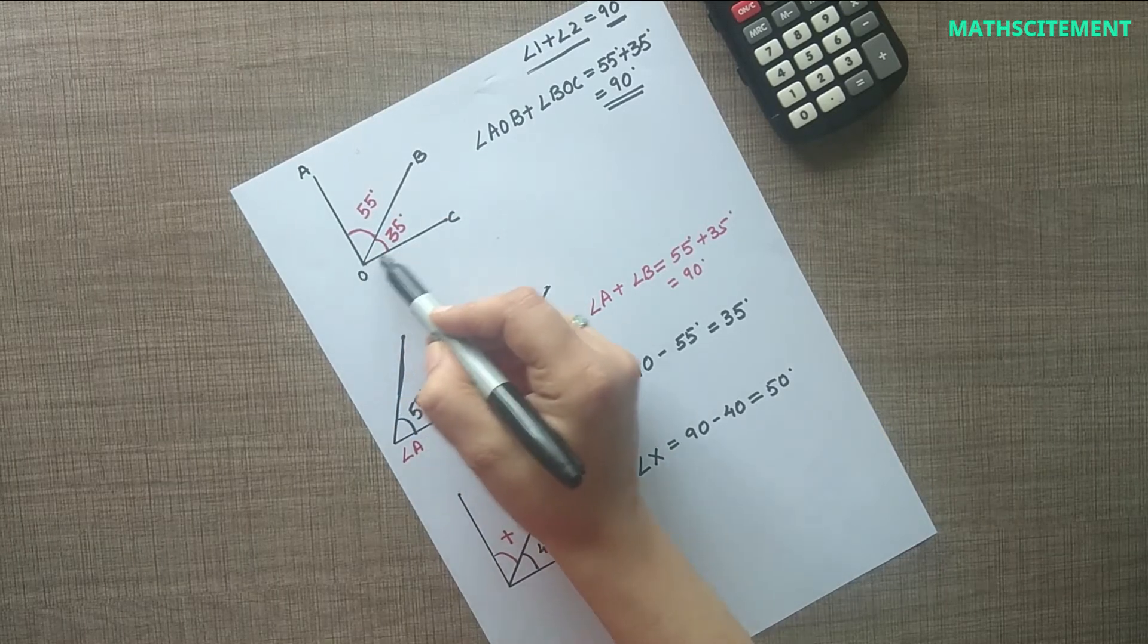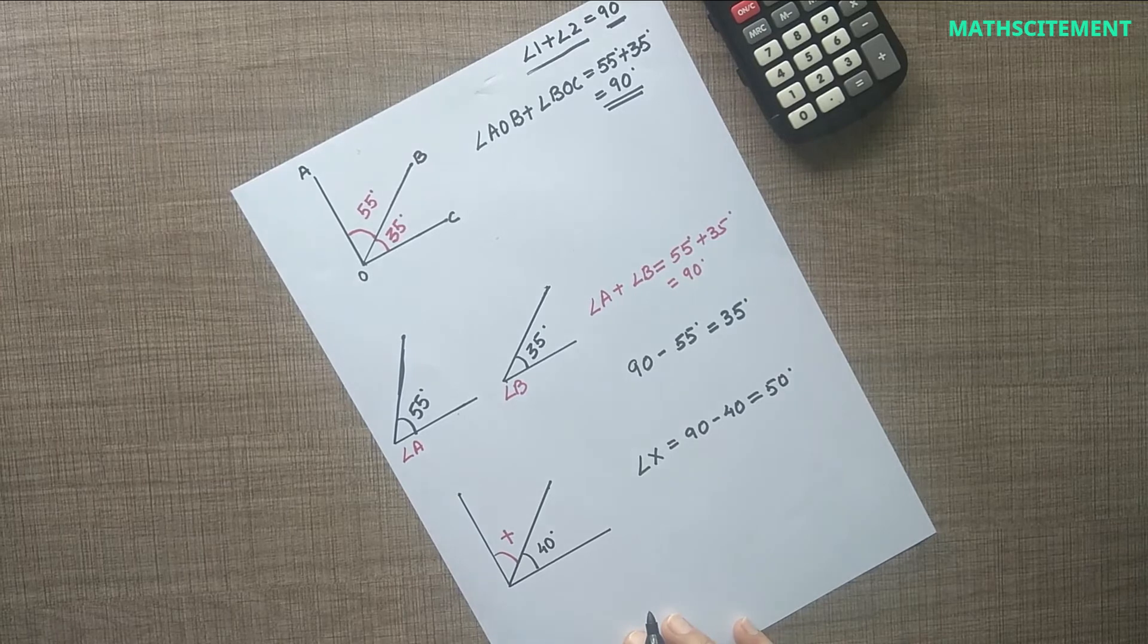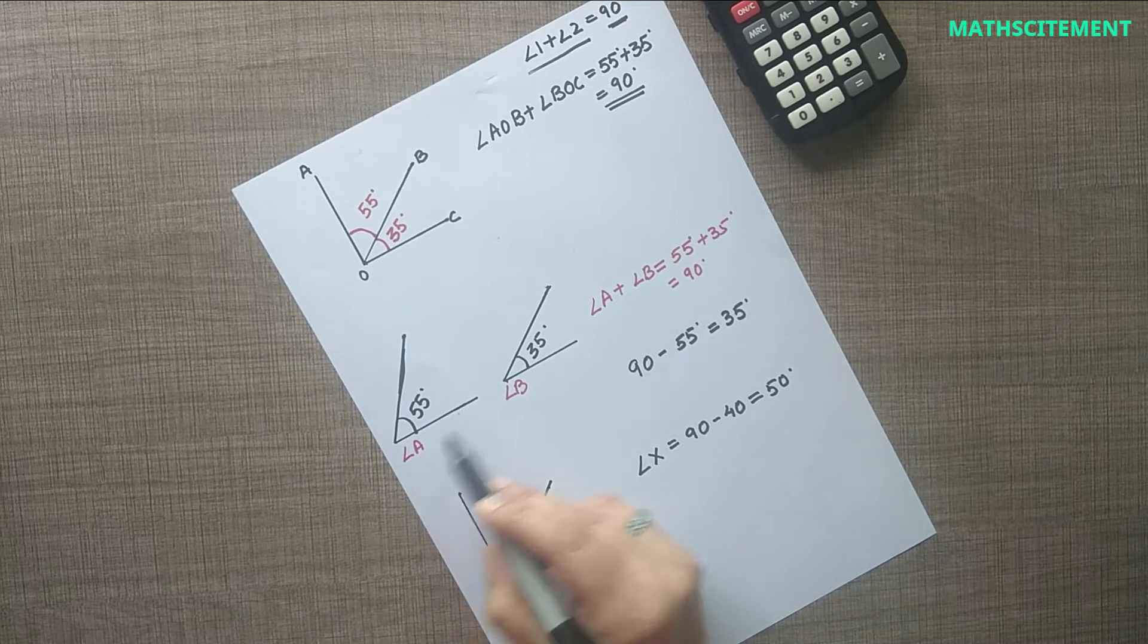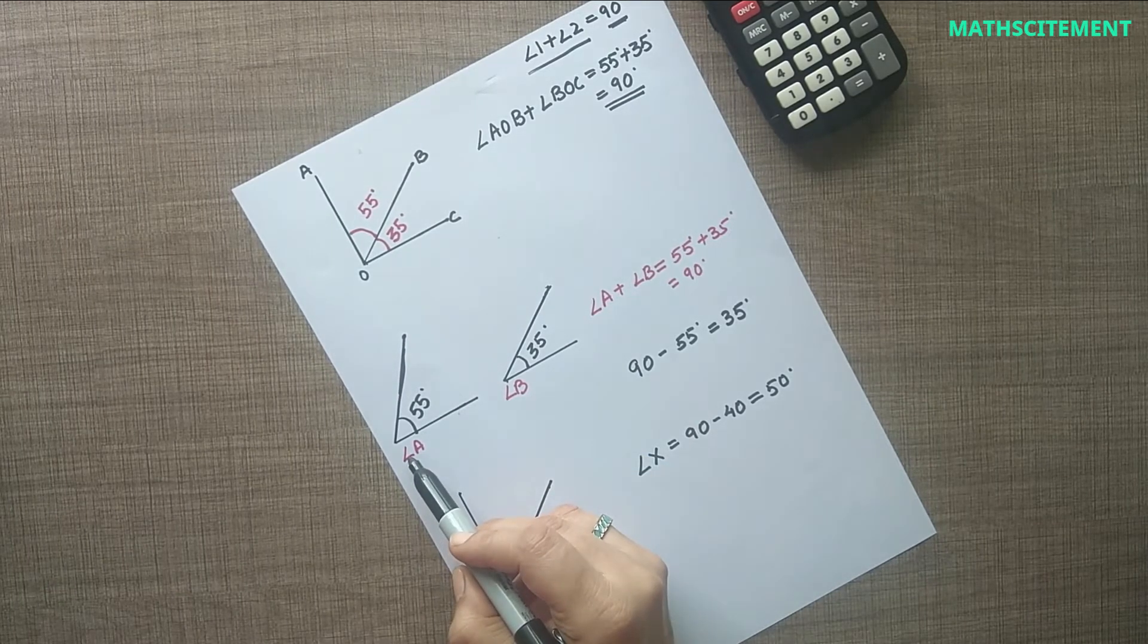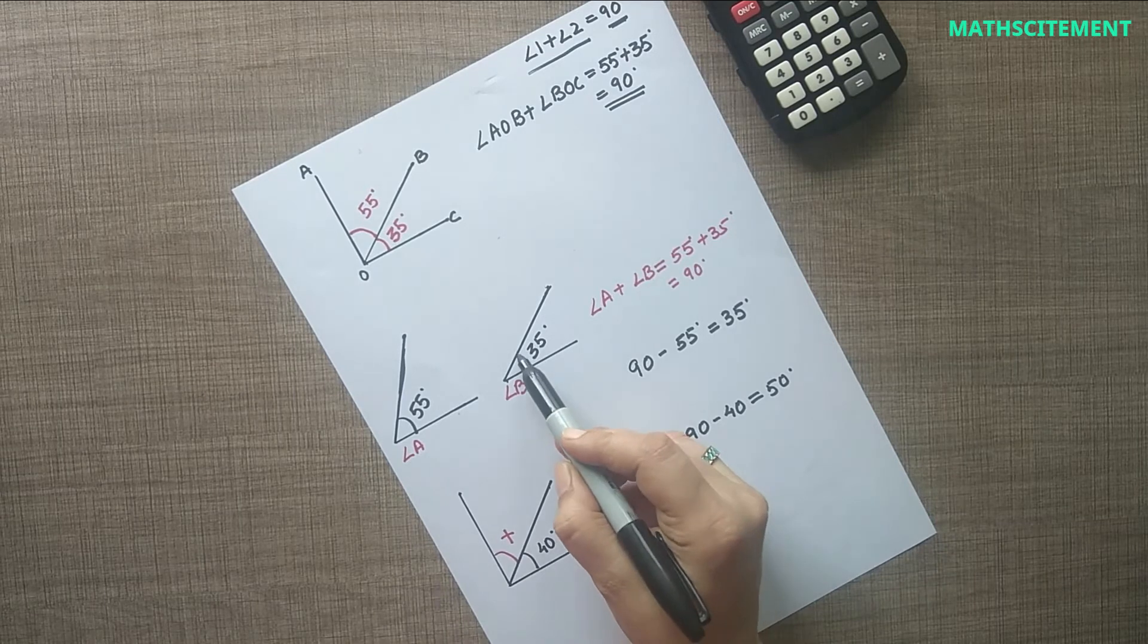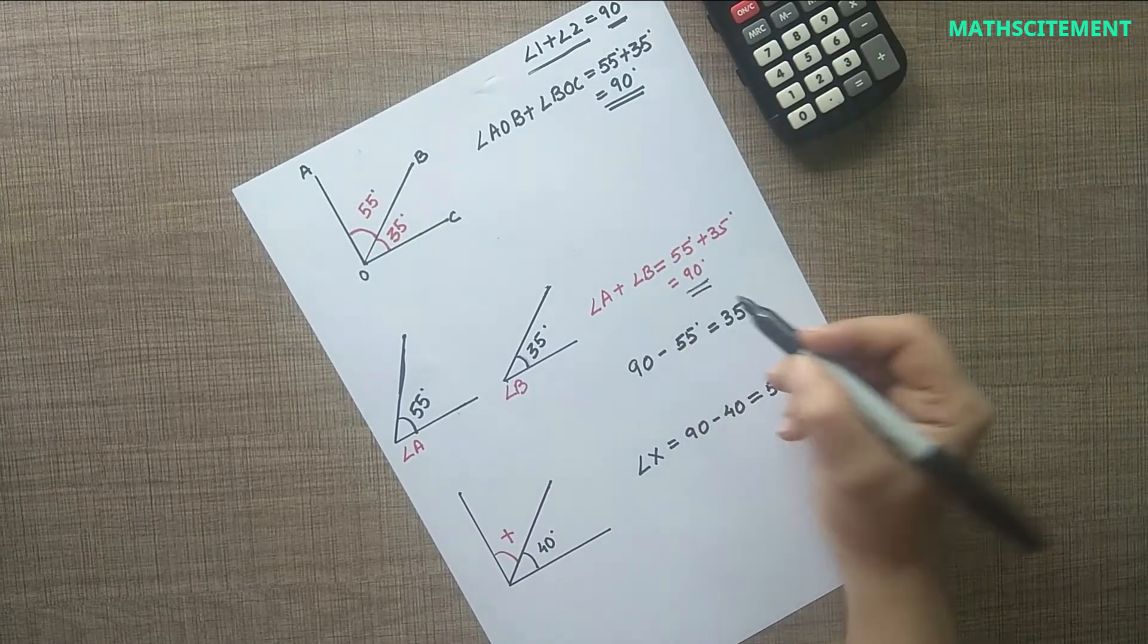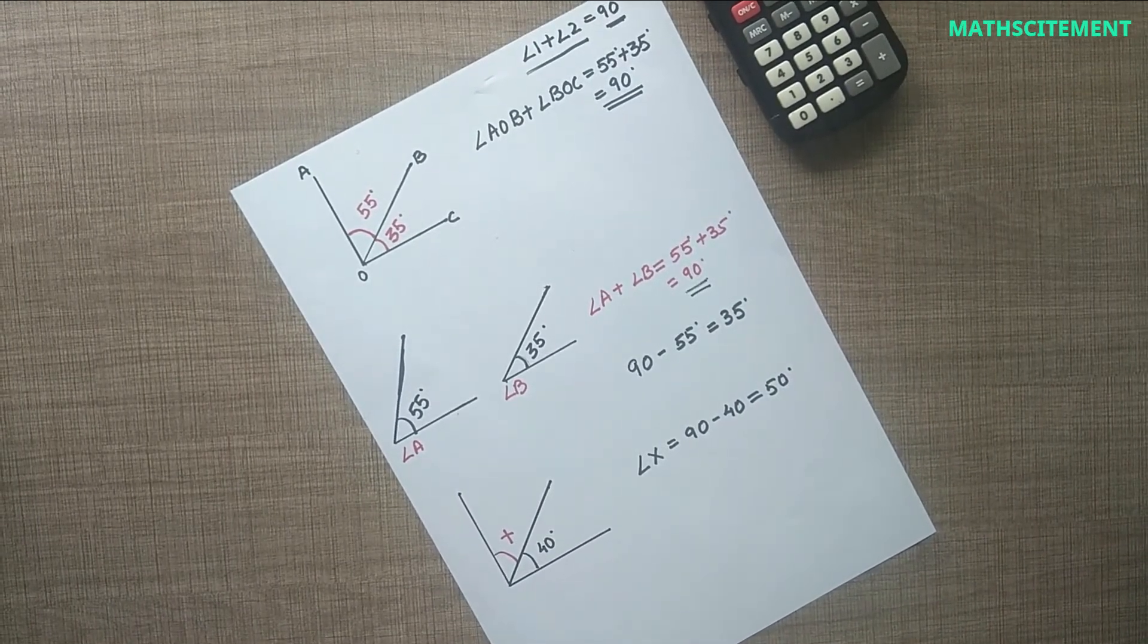In another example of complementary angles that are not adjacent to each other, the measurement of angle A plus the measurement of angle B results in 90 degrees. Hence, they are complementary even though they do not lie next to each other.